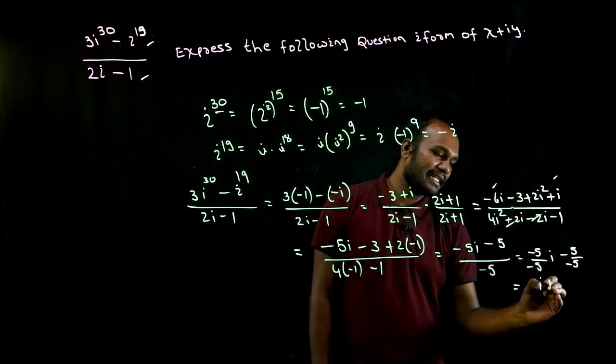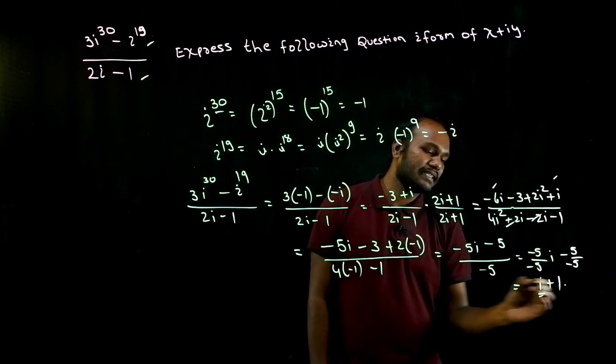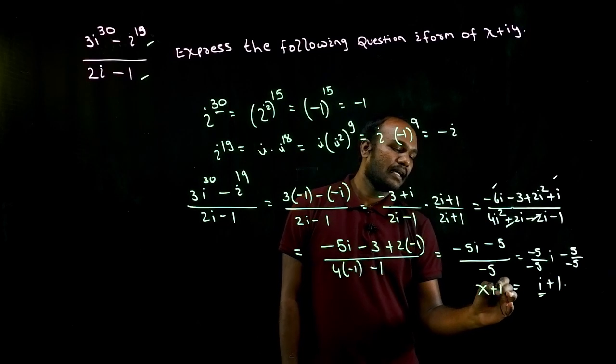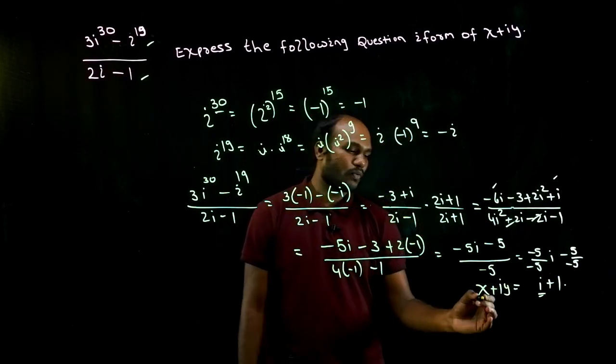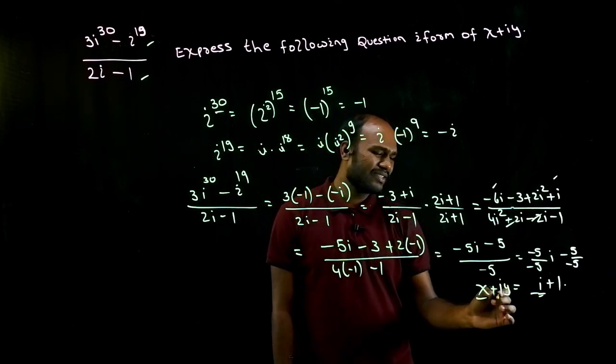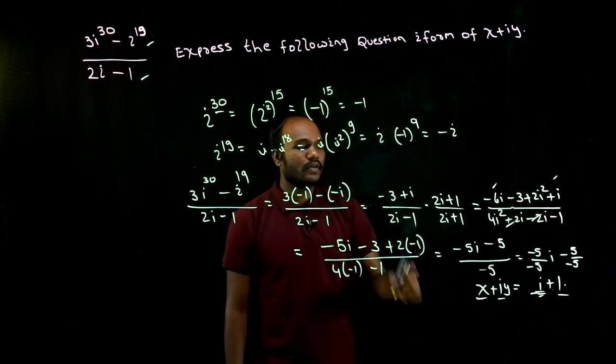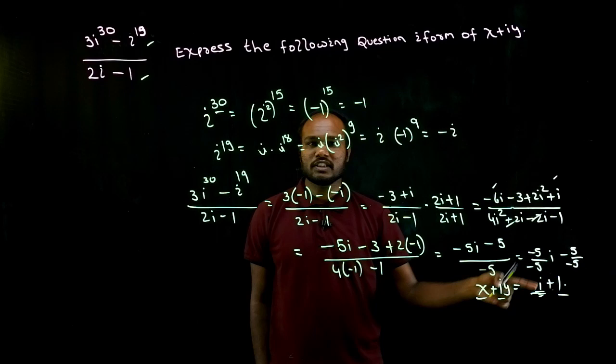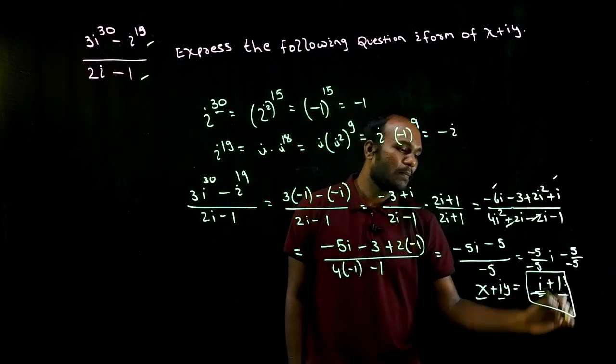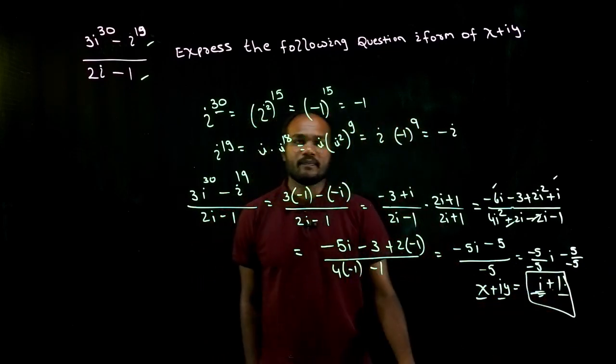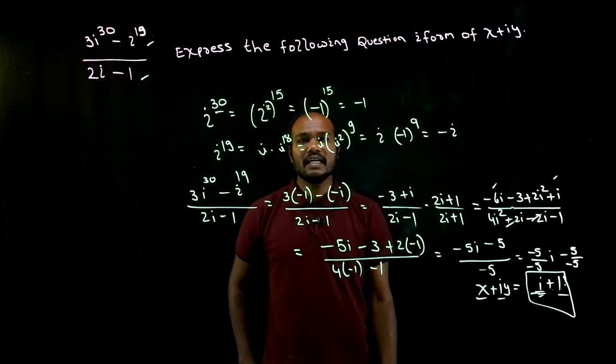So how much is that? Minus minus cancel here, also minus minus cancel, so i plus 1. This is the value of x plus i y. So value of x is 1, sorry, y is also 1, right? Value of y is 1, x is also 1. In your textbook, it is given as minus i plus 1. Please correct this. Okay, answer is plus i plus 1. Is that okay? Yes or no? Yes.